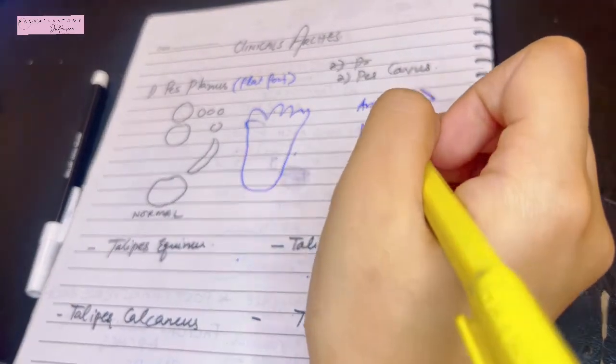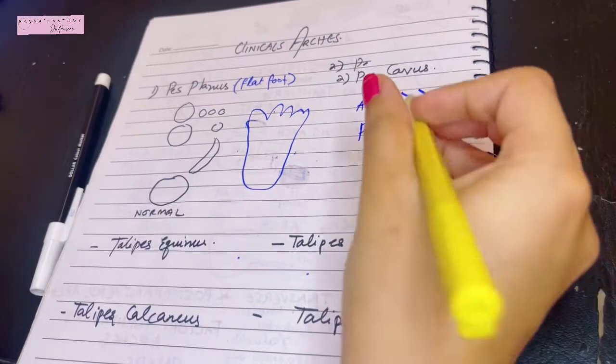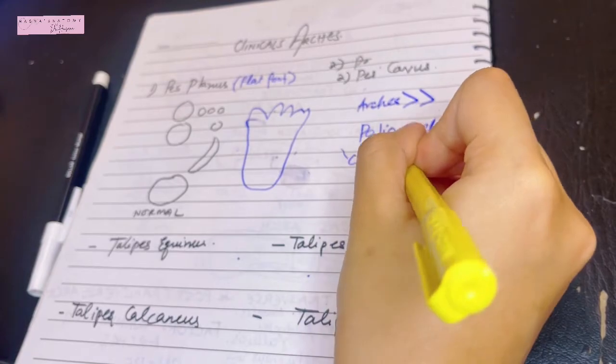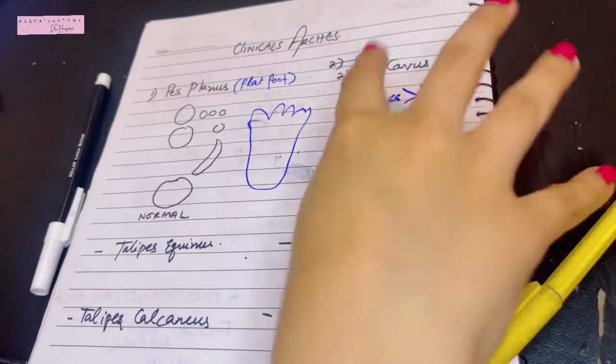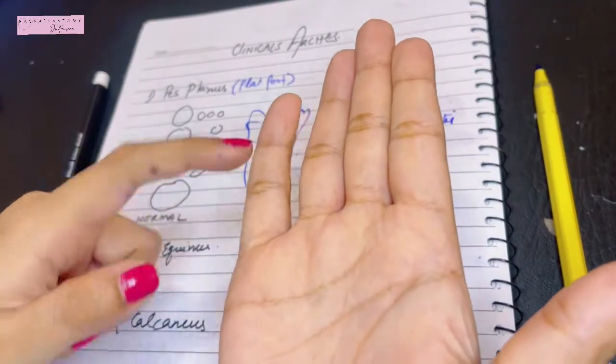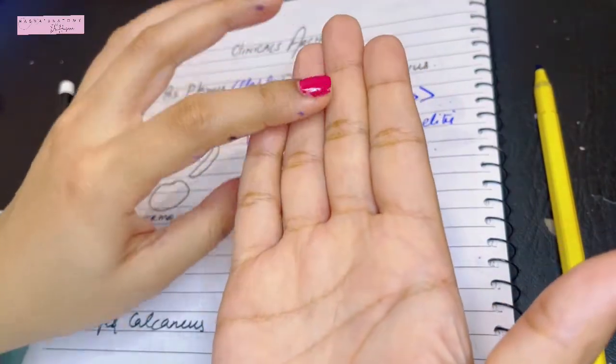Pes cavus can also form clawfoot. Now clawfoot is obviously going to be with pes cavus, exaggeration of the arches, plus there will be at the metatarsophalangeal joint there will be extension and in the interphalangeal joint flexion - clawfoot.